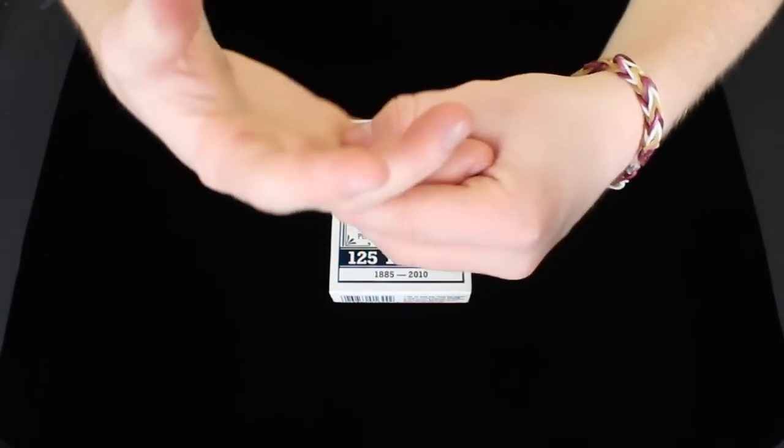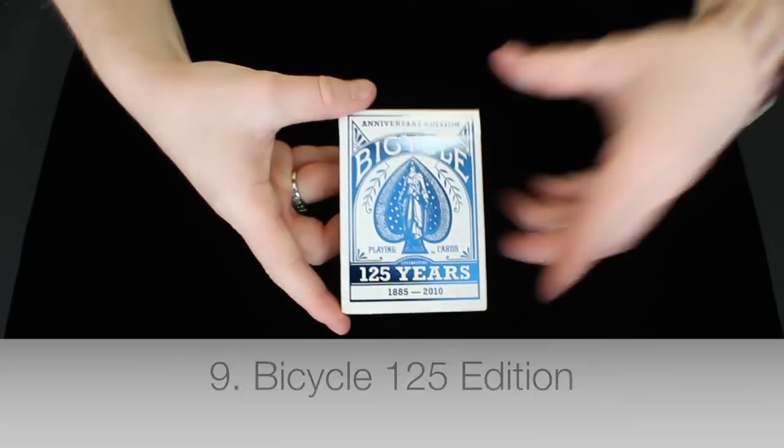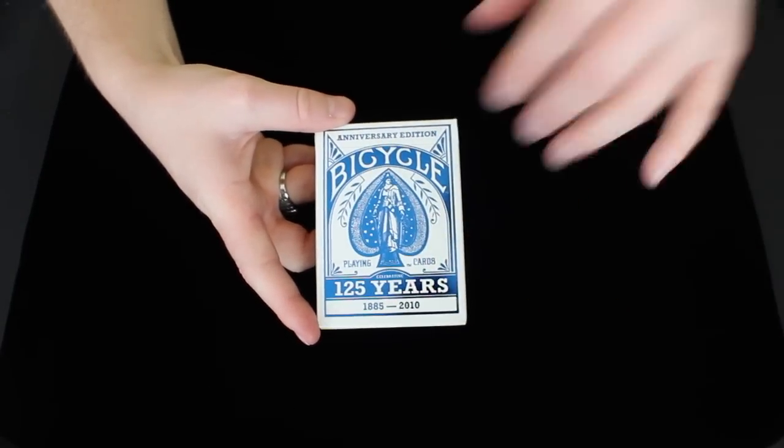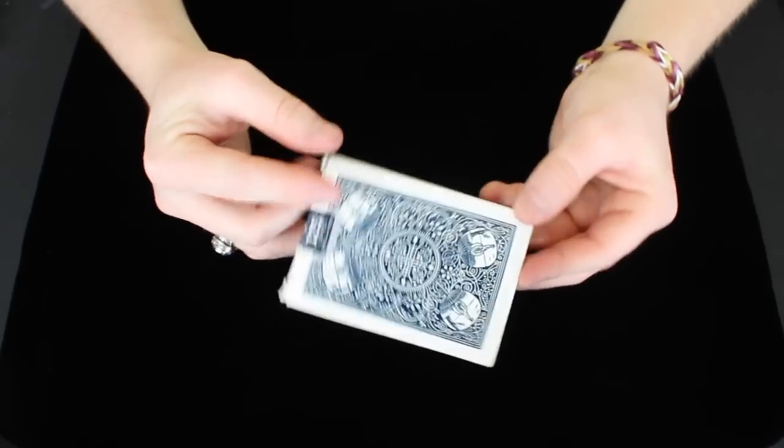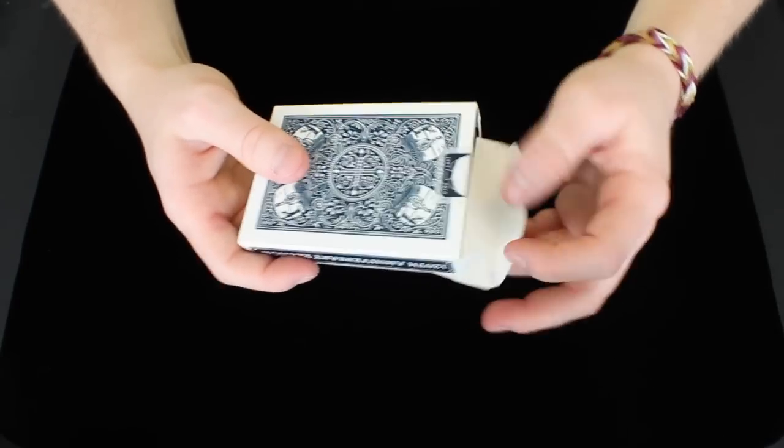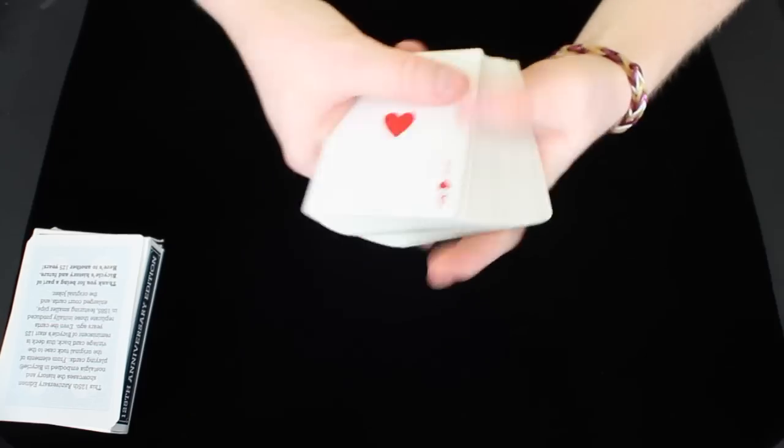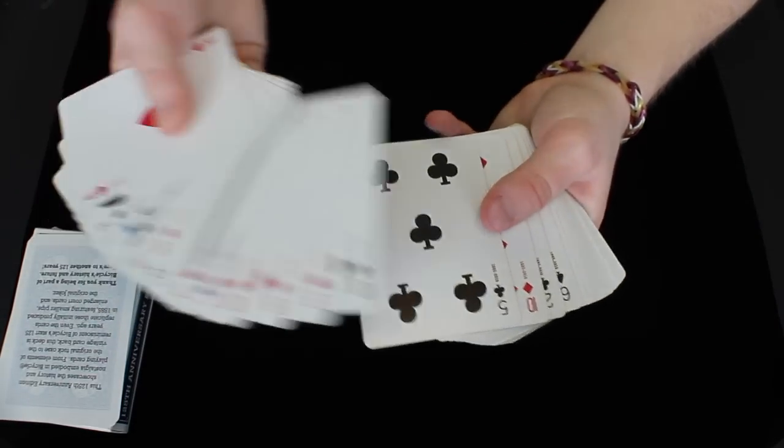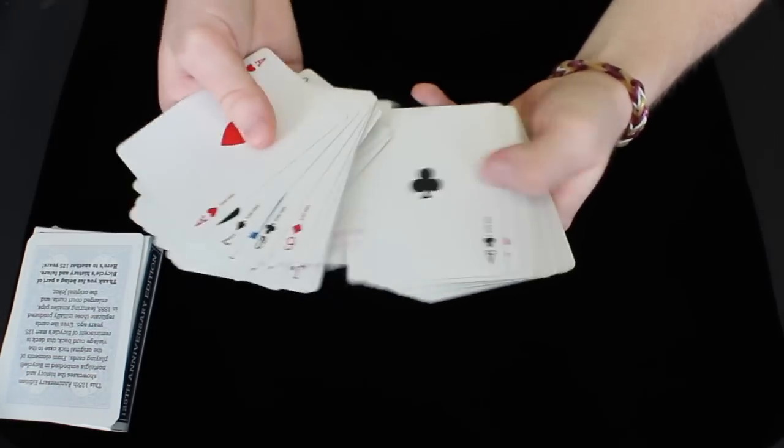At number 9 we have the Bicycle 125 editions. These cards are very cool. They were to commemorate 125 years of bicycle playing cards being around. This is the blue version but they have one in red. It looks very cool. It has a standard looking back design and all that good stuff. The cards themselves have a super vintage-y feel. The pips and like the symbols and stuff, it's very similar to kind of like an Arco vibe.